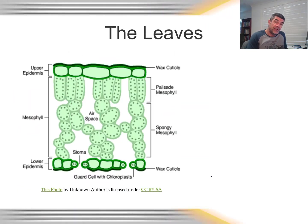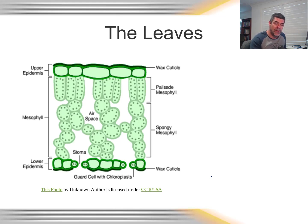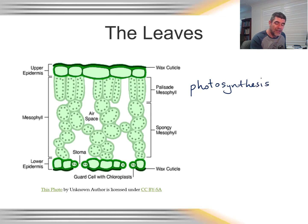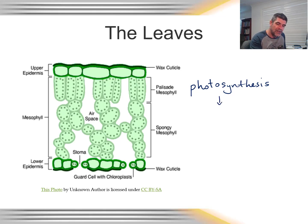In our first video on autotrophs, we recognised three key organs in plants. The first of those are leaves. Leaves are critically important — their primary purpose is photosynthesis. This is where the bulk of photosynthesis occurs and where light is captured, so it's about maximising surface area. Because photosynthesis occurs in chloroplasts, we need cells with lots of chloroplasts to support a high rate of photosynthesis.